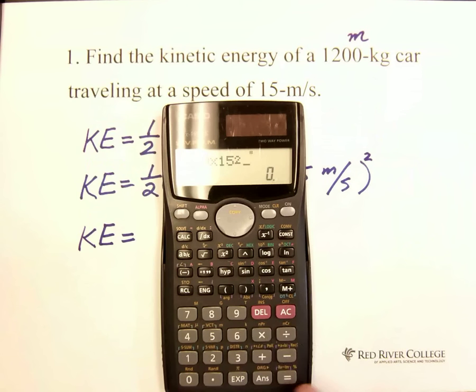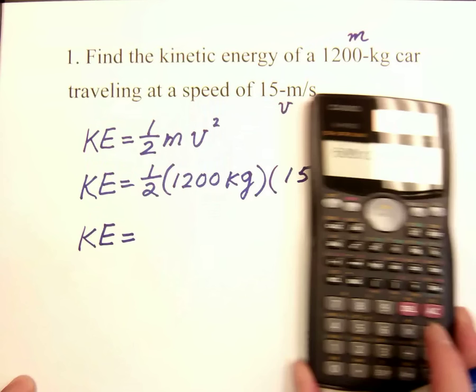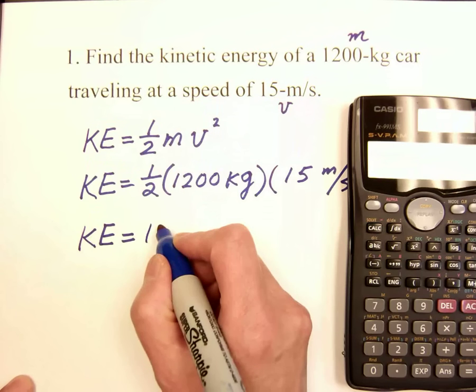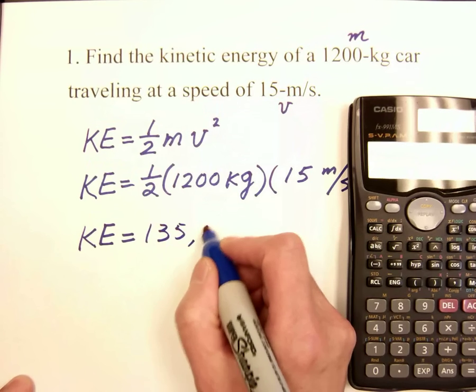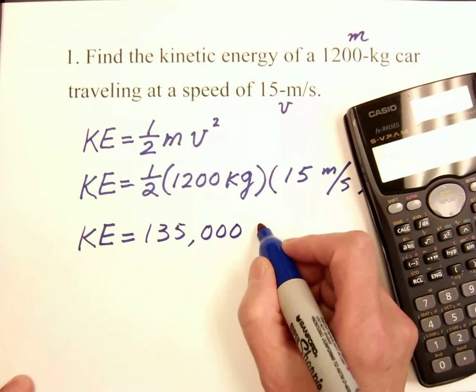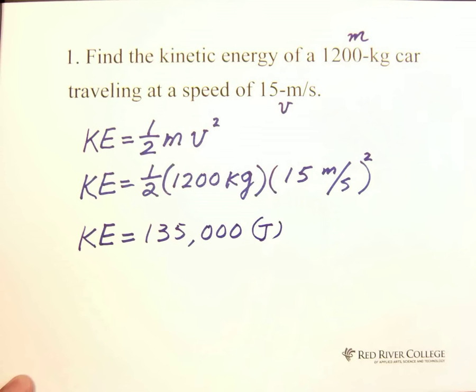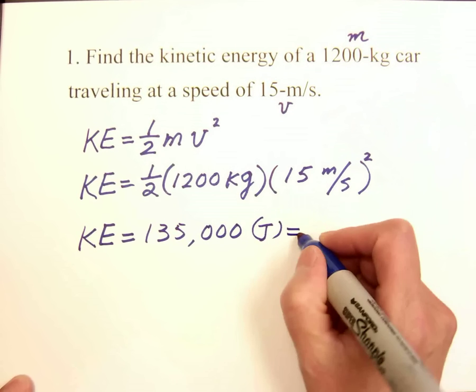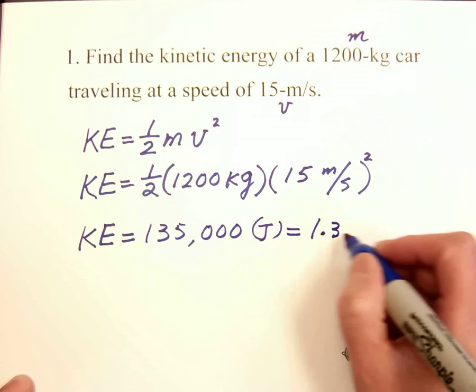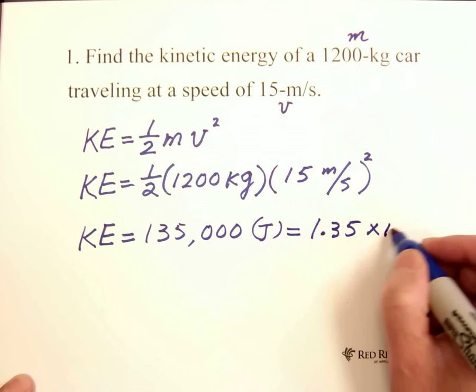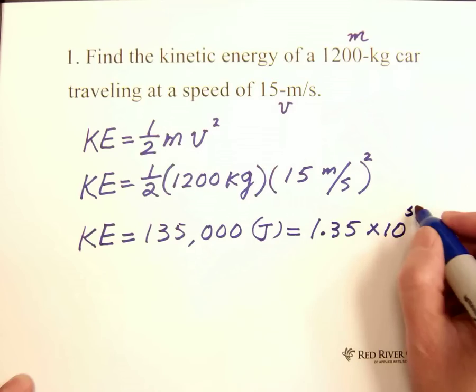Now, we have answer is 135,000 joules. And we can write scientific notation. We express as 1.35 times 10 to the 5 exponent joules.